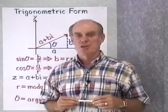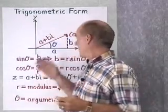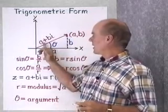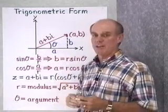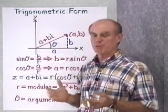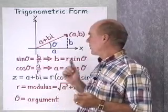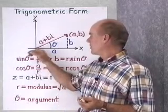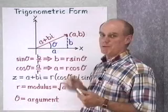In this section, we want to look at trigonometric form for complex numbers. In the diagram I've written over here, if we have the complex number in standard form or algebraic form, the graph is a vector that goes from the origin out to the point.